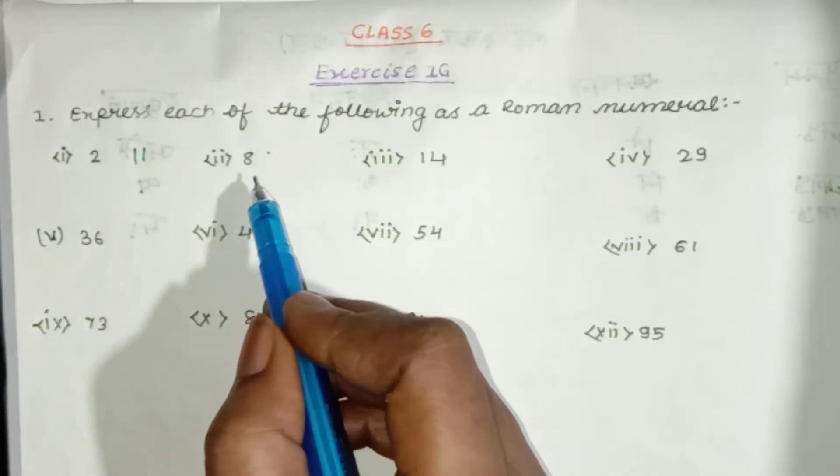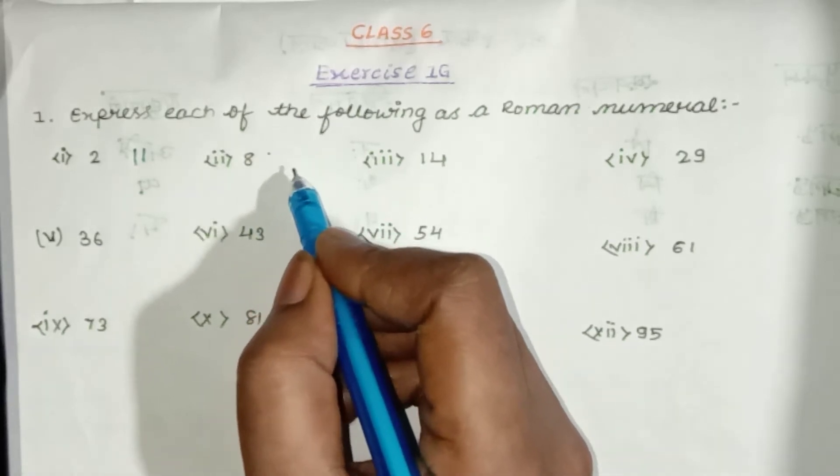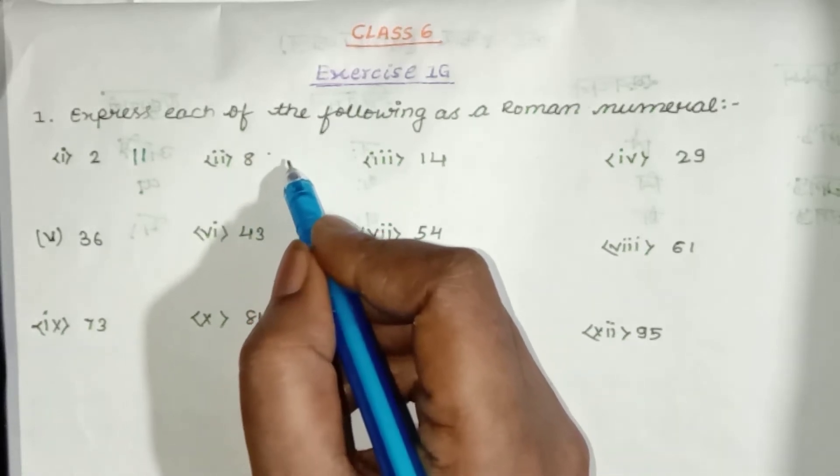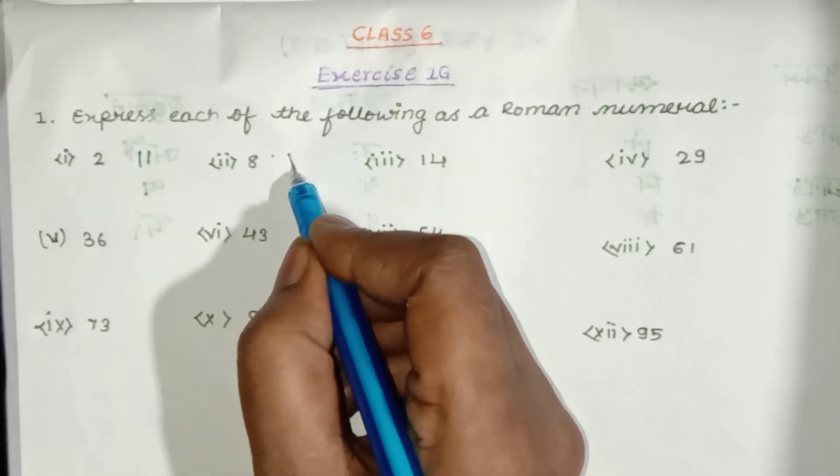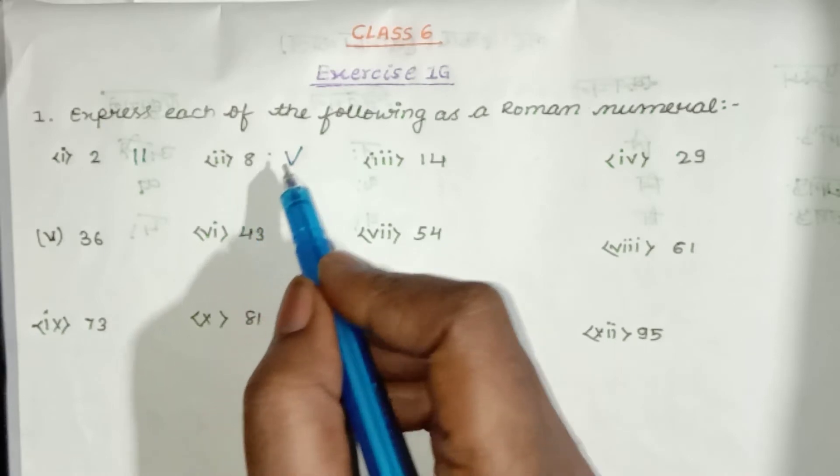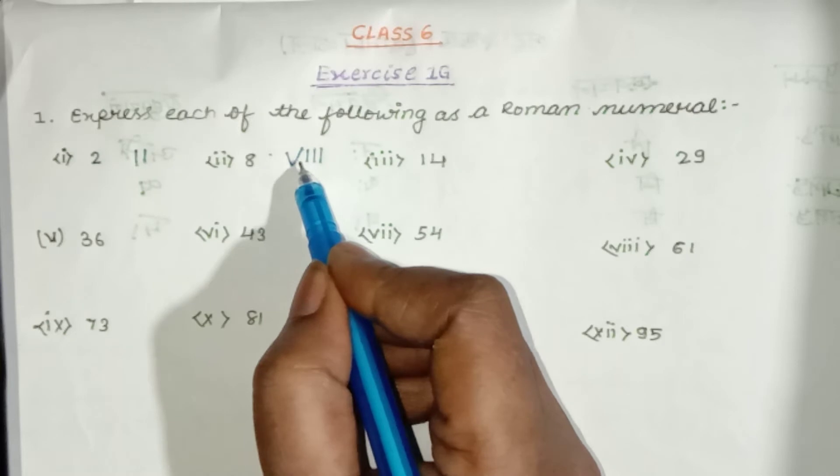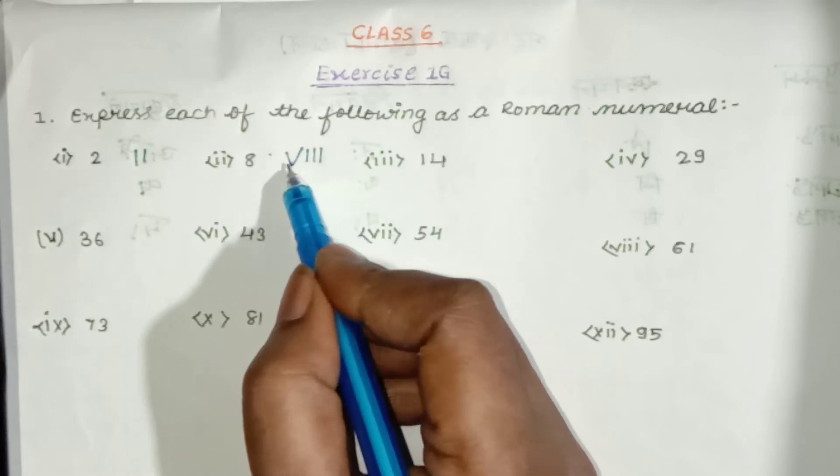Next is 8. We will write it like this. You will know how to write it like this. This is 5. 5 plus 3 is equal to 8.